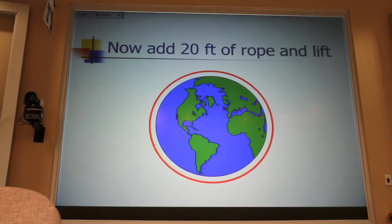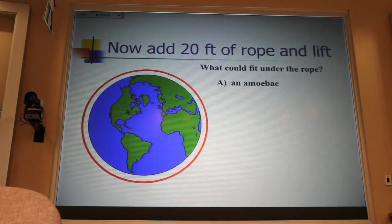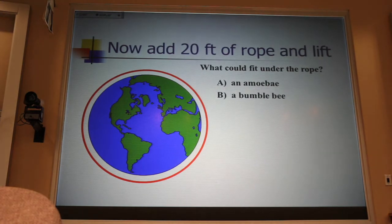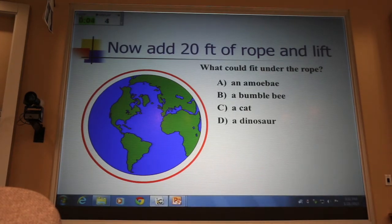Now, what's the smallest thing that could fit under this rope? Would it be an amoeba, a bumblebee, a cat, or a dinosaur? With your clicker people, what is the smallest thing that could fit under this rope?